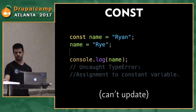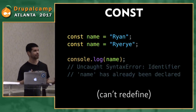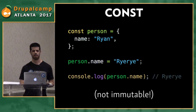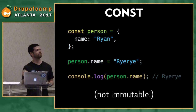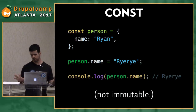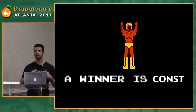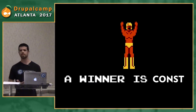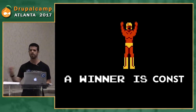Const is awesome because it can't be updated or redefined — you'll get an error both ways. Caveat: it's not immutable. If you have an object like 'const person = {name: ...}', you can still redefine person.name because the const is the object itself, not the properties within it. Const versus let — which should you use? Use const. For loops, use let. Const is a great way to signal to other developers that this value is not going to be updated or redefined anywhere, which drives clean, reusable code.